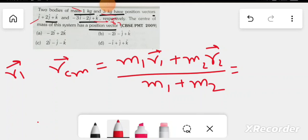M1 is equal to 1. M1 into R1 is equal to i plus 2j plus k.